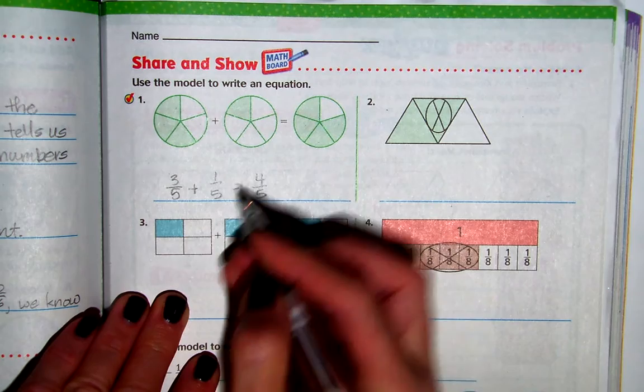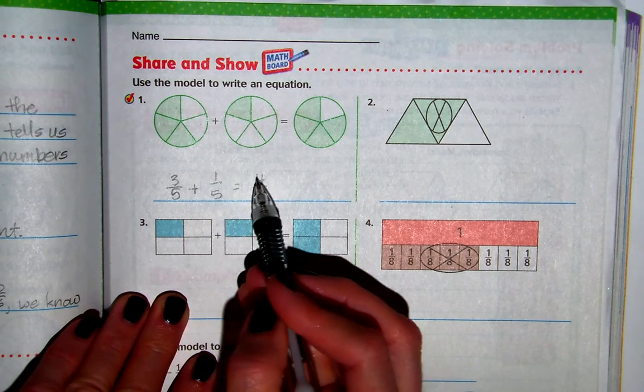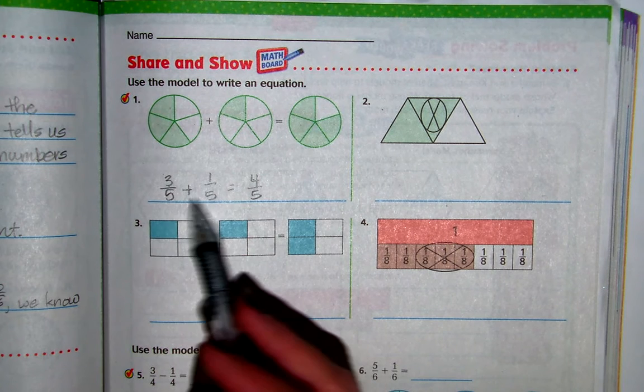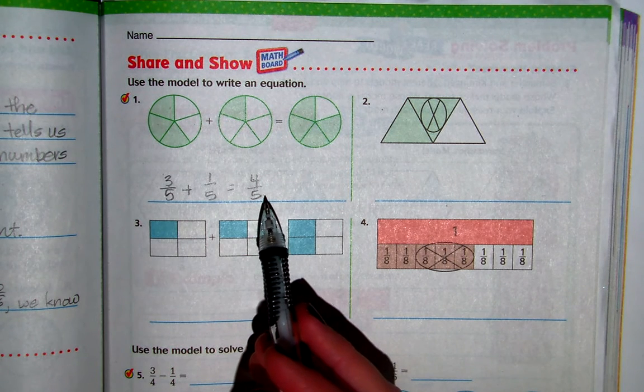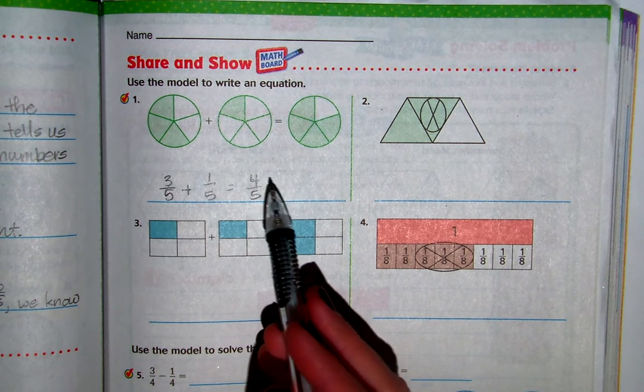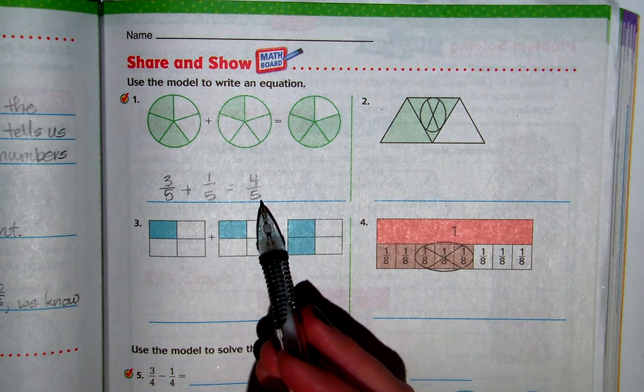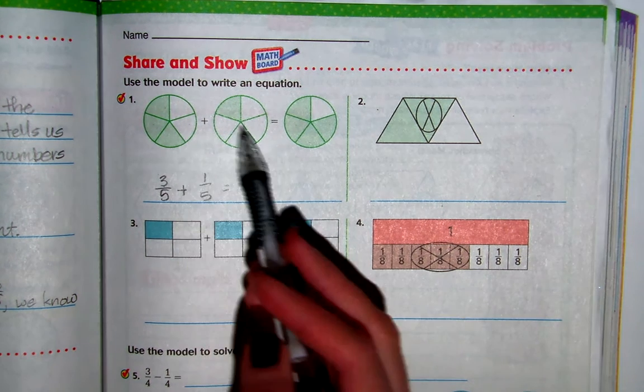And sure enough, 3 plus 1 equals 4. Now remember, we never, never, never change, we never, never add these denominators here. We only add numerators and we can only add them when the denominators are exactly the same. And these are all pieces of the same whole.